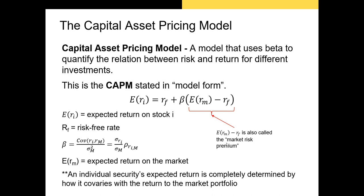The market risk premium is the amount the market earns beyond the yield on the risk-free asset. The beta in this model is calculated using OLS regression. Beta can also be calculated as the covariance between the stock return and the market return divided by the variance of the market, also known as the variance of the S&P 500.